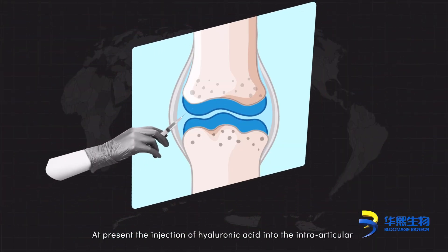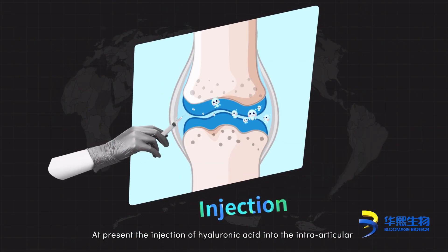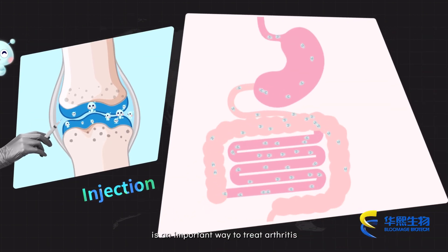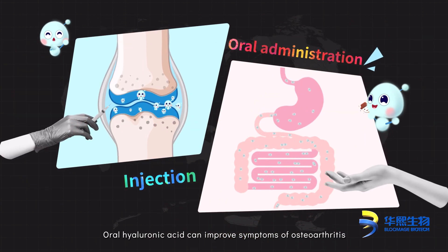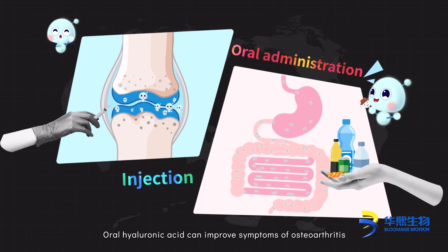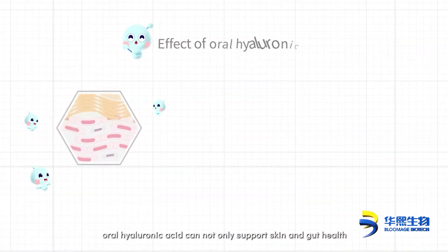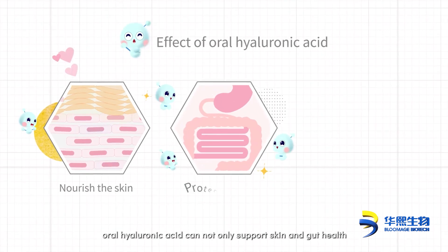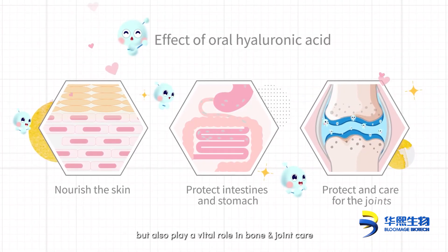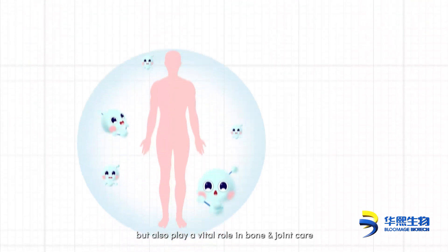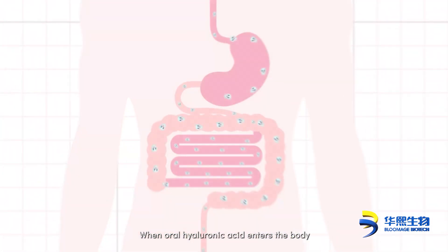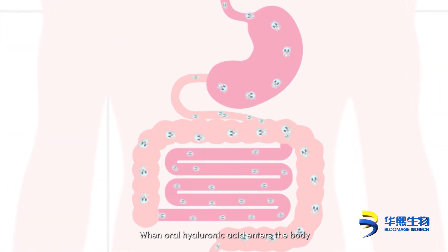At present, the injection of hyaluronic acid into the intraarticular space is an important way to treat arthritis. Oral hyaluronic acid can improve symptoms of osteoarthritis, and can not only support skin and gut health but also play a vital role in bone and joint care — protect your knee before pain comes.